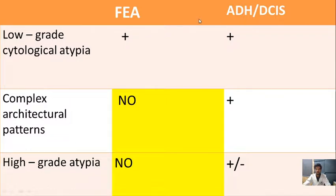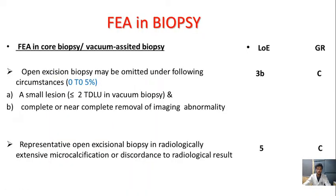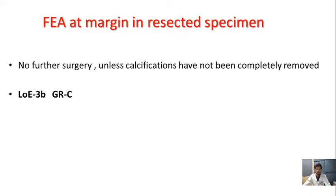Flat epithelial atypia is distinguished from atypical ductal hyperplasia and ductal carcinoma in situ — both are associated with low-grade cytological atypia; however, the complex architectural patterns and high-grade atypia are absent in flat epithelial atypia. Open excisional biopsy may be omitted in: small lesions involving less than or equal to 2 terminal duct lobular units, or complete or near-complete removal of imaging abnormality (level of evidence B, grade C). Representative open excisional biopsy is recommended in radiologically extensive microcalcification or discordant radiological results (level of evidence B, grade 5). No further surgery is recommended if calcification is completely removed at the resectory specimen margin (grade C recommendation).